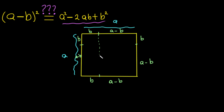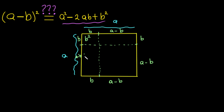Now let's separate them. If we separate them like this with dotted lines, we now have this shape divided into parts. The area of the small square in one corner is b multiplied by b, which is b². For this rectangle here, it's (a minus b) multiplied by b, so I'll write it as b multiplied by (a minus b).